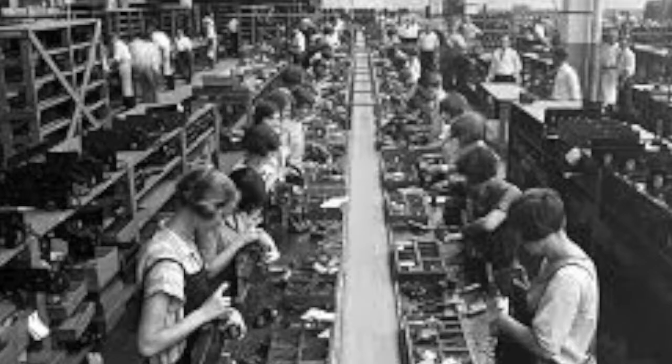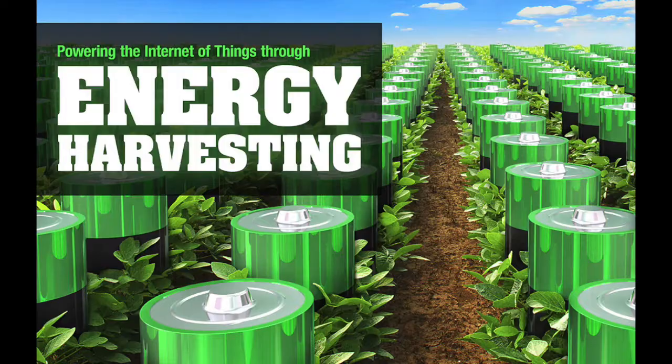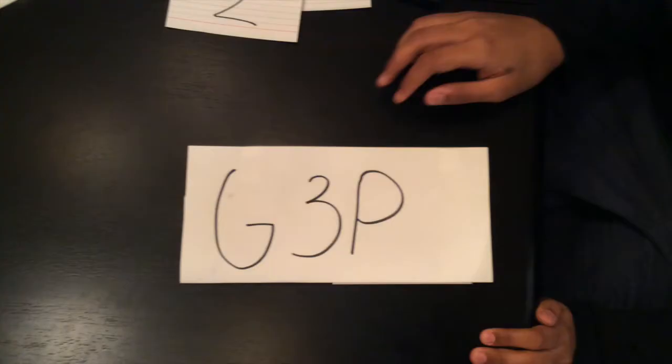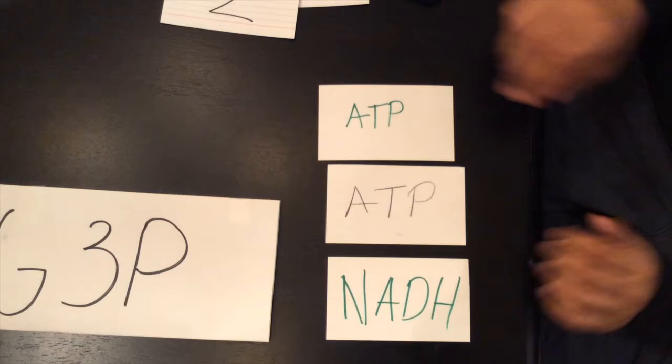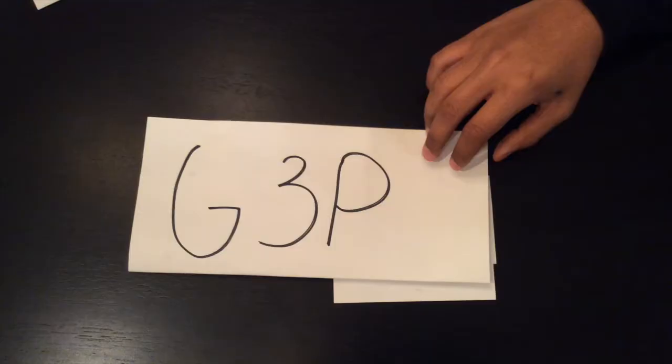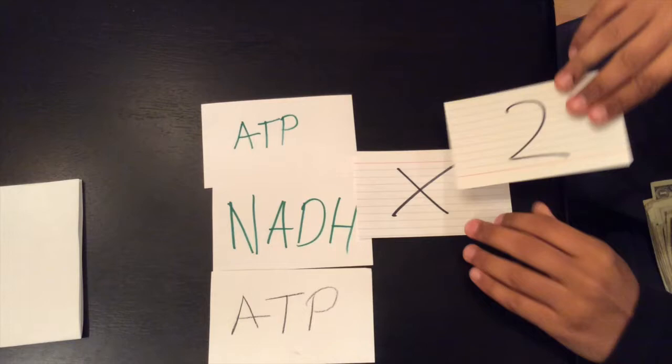In phase three, G3P gets rearranged and oxidized by an enzymatic assembly line that harvests energy from each G3P — one NADH and two ATPs. Double this yield for two G3P: two NADH and four ATPs. That's the gross yield for every glucose.